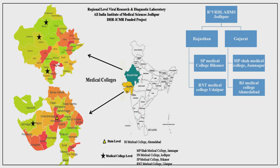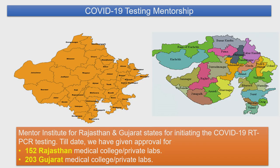As the Regional VRDL, we cater to both Rajasthan and Gujarat, with four affiliated medical colleges: SP Medical College Bikaner, RNT Medical College Udaipur in Rajasthan, and MP Shah Medical College Jamnagar and BJ Medical College Ahmedabad in Gujarat. DHR gave us the mentorship for COVID-19 laboratory development across these two states. Under the leadership of our Director, we approved 152 Rajasthan medical colleges and private labs, and 203 Gujarat medical colleges and private labs, for COVID-19 testing after reviewing their QC.